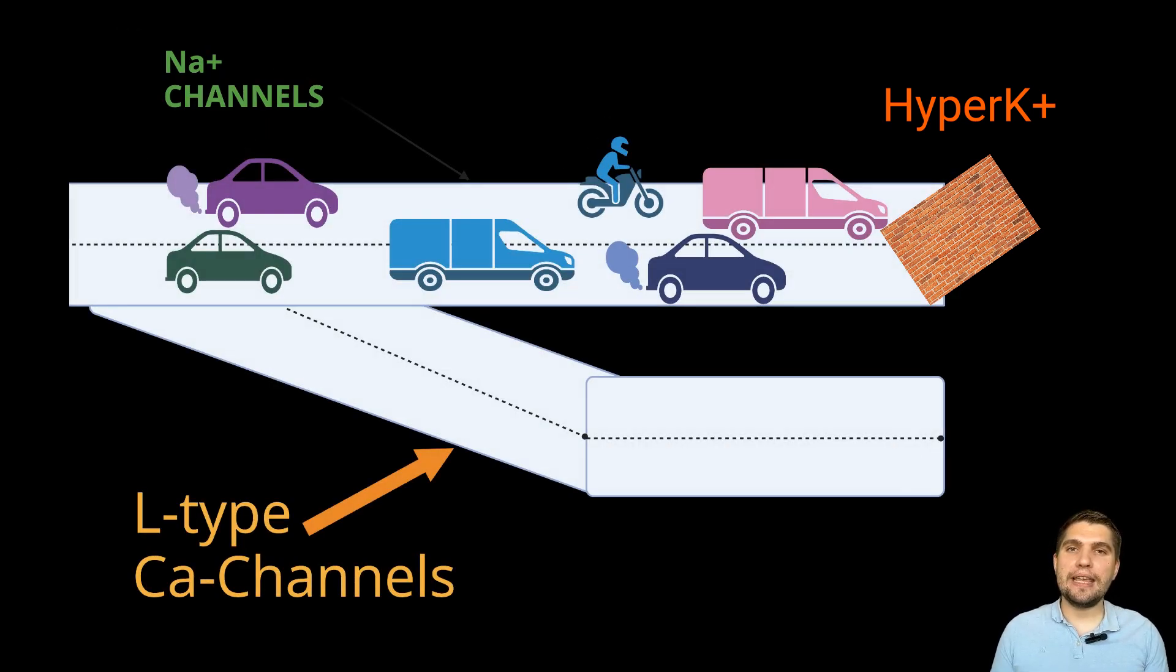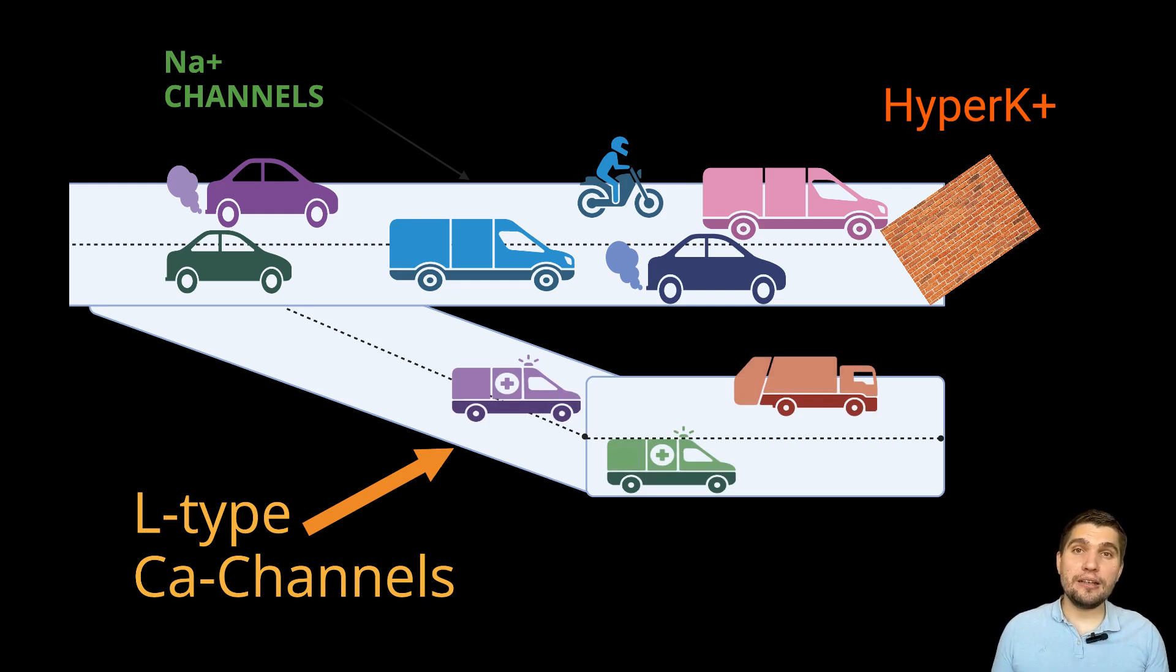Now, here's where calcium gluconate comes in. Instead of clearing the blockage, in other words, fixing sodium channels, it opens up a new emergency lane, L-type calcium channels, on the side of the road. Ambulances and emergency vehicles, i.e. electrical signals, can now bypass the blockage and keep moving, even though the original lanes, i.e. sodium channels, are still closed. So, calcium gluconate doesn't fix the original traffic jam, sodium channels. It just creates a new way for signals to get through, allowing the heart to keep beating properly despite severe hyperkalemia.